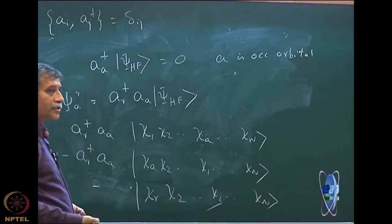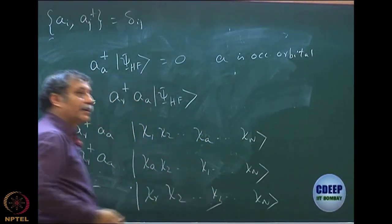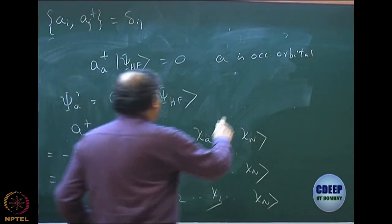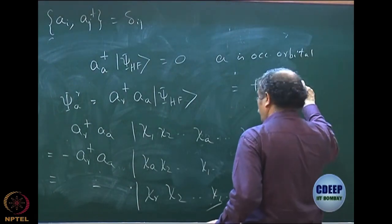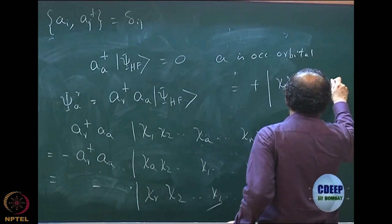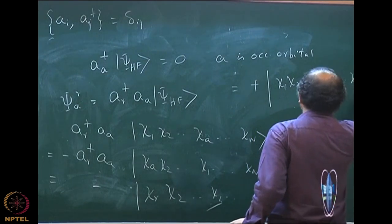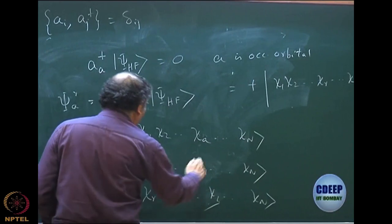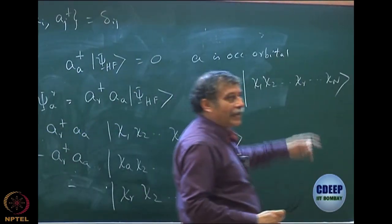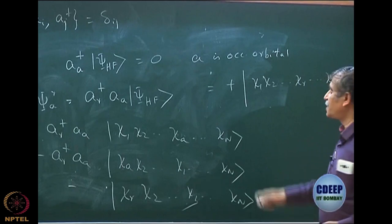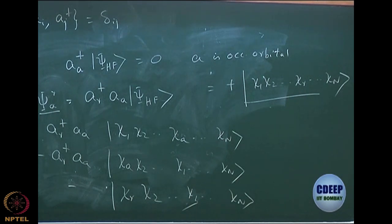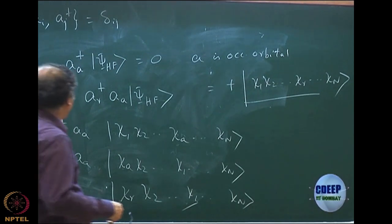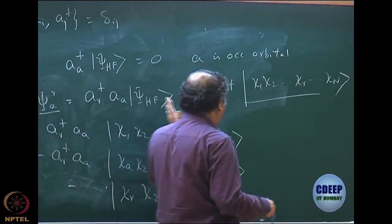Then I do exactly the opposite: I push chi-1 and chi-R again, so this becomes plus, the minus becomes plus again. I get back chi-1, chi-2, and wherever A was, R has gone — R is replacing A, and I get back this determinant. This is exactly my psi_A^R. So the second quantized notation to write psi_A^R, a singly excited determinant, is A_R-dagger A_A acting on psi Hartree-Fock.